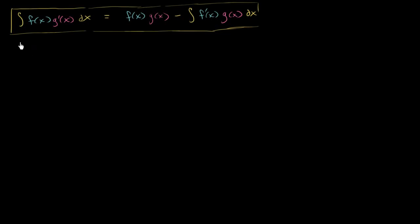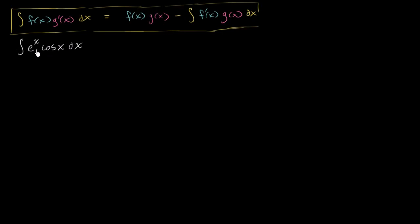Let's see if we can use integration by parts to find the antiderivative of e to the x cosine of x dx. Whenever we talk about integration by parts, we ask which of these functions — e to the x or cosine of x — if I were to take its derivative, would become simpler? In this case, neither of them becomes simpler, and neither becomes dramatically more complicated when I take their antiderivative. So it's kind of a toss-up which one I assign to f of x and which to g prime of x, and you can solve this problem either way.